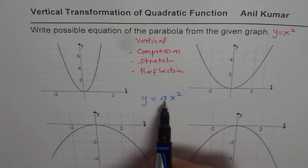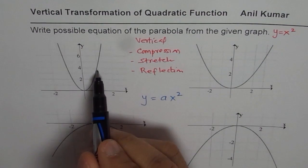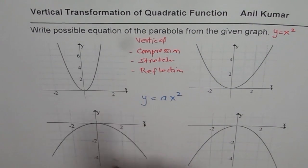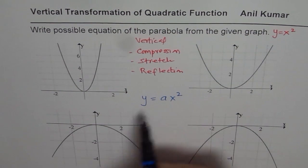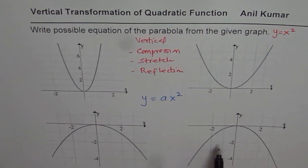That means narrower. If a is between 0 and 1, it is vertically compressed, kind of like this. Wider.